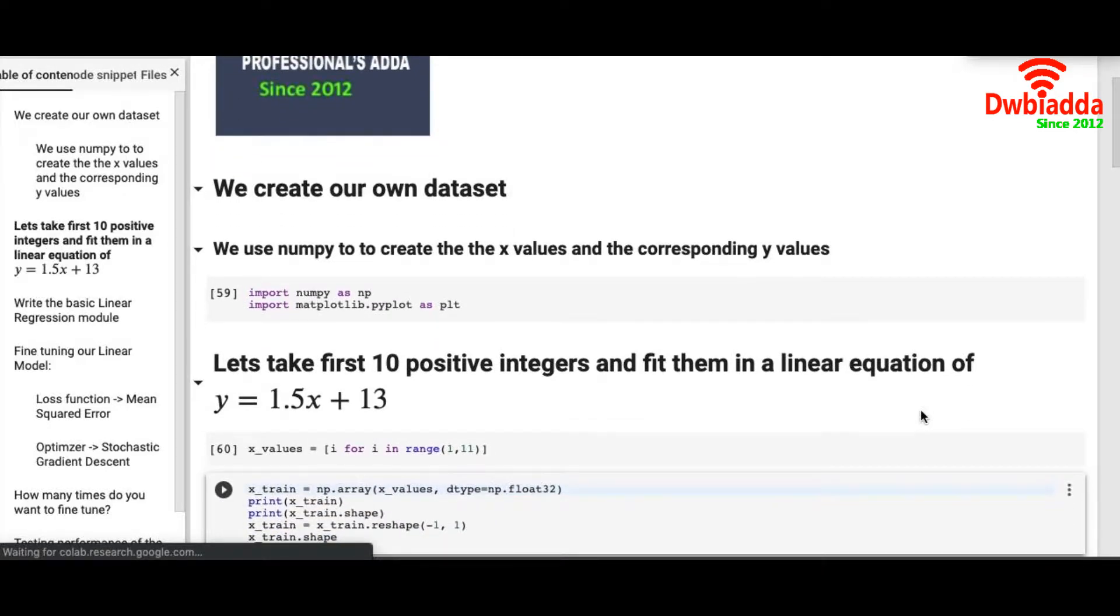To implement a neural network that acts as a linear regression model, we will create our own dataset first. We will take one value of X and we shall get a corresponding value of Y from a simple linear equation. And we will fit a linear regression model that will try to predict that equation.